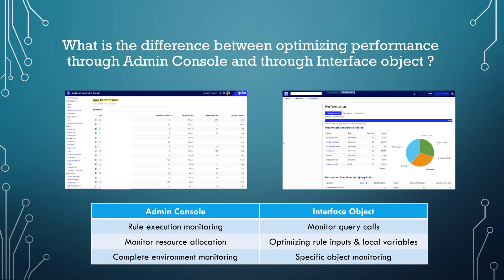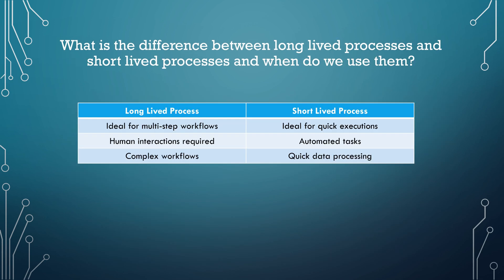Our next question is: what is the difference between a long-lived process and a short-lived process, and when do we use them? Long-lived processes are ideal for multiple-step workflows — for example, where multiple approvals are required at various stages and human interaction is needed. When a human needs to approve, the process remains in the active stage. We use long-lived processes where complex workflows need to be implemented.